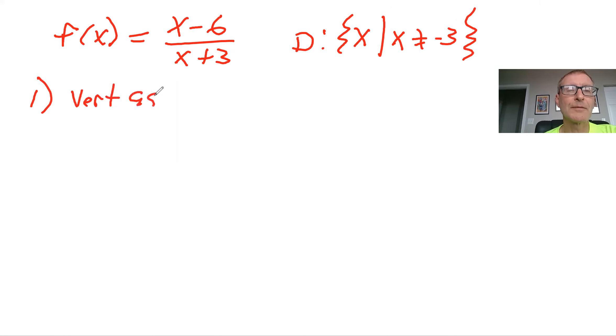So when you calculate the vertical asymptotes, there are two things you want to do. First thing is make sure the equation is reduced.